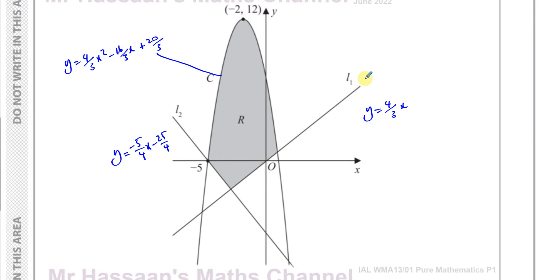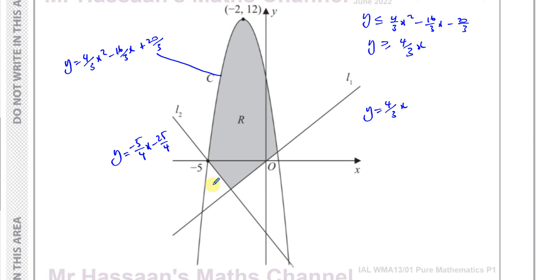So those are the three inequalities which define region R. Region R is where y ≤ (4/3)x² - (16/3)x - 20/3, meaning below the curve; y ≥ (4/3)x, meaning above line L1; and y ≥ -(5/4)x - 25/4, meaning above line L2.